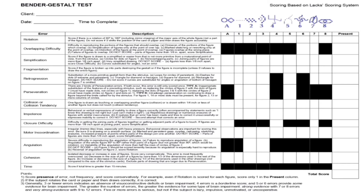After perseveration comes Collision and Collision Tendency, observed across all cards. Since all nine figures are drawn on a single paper, if figure 1 is colliding or touching figure 2, or figure 5 is touching figure 4, this is called Collision and Collision Tendency. If present, write 1; if not, write 0.